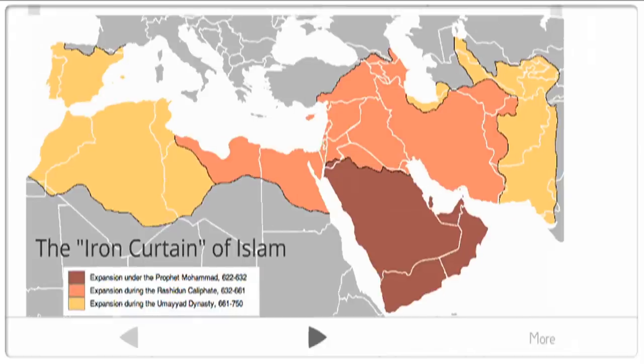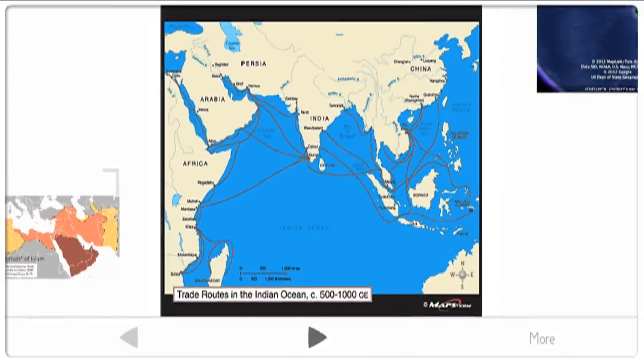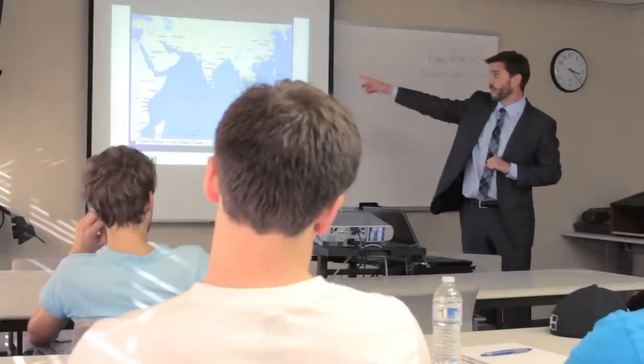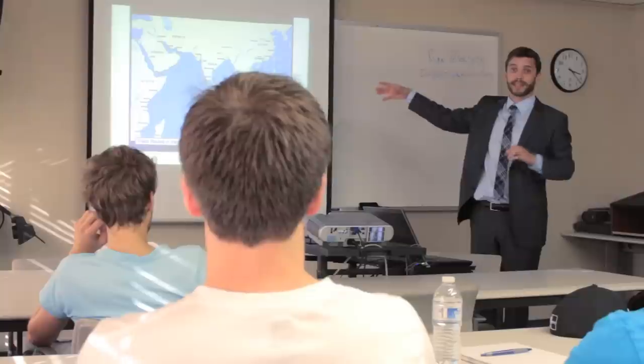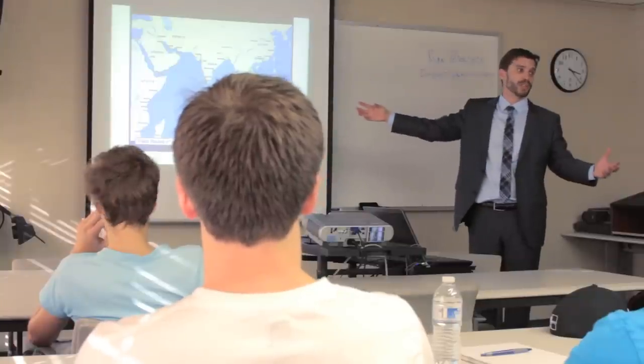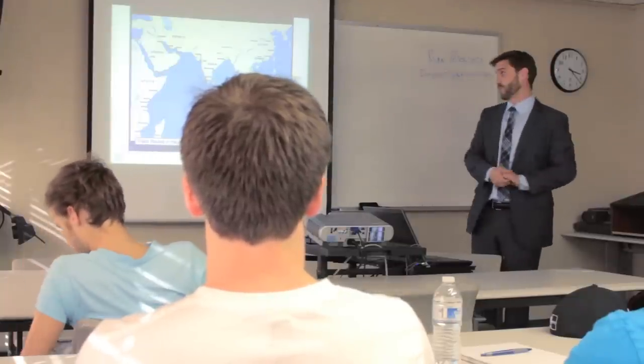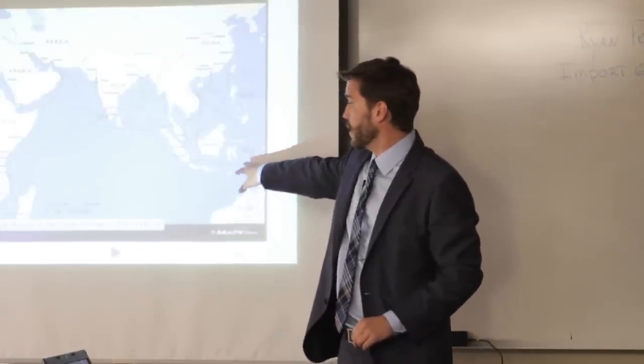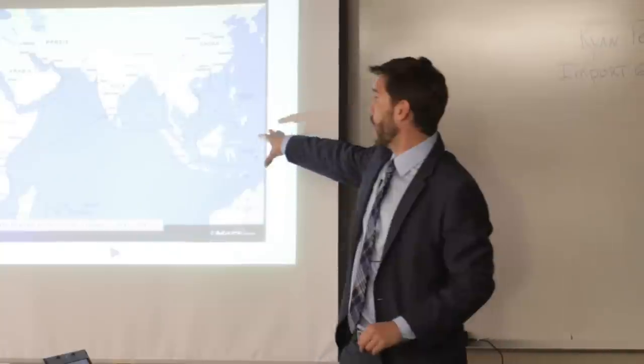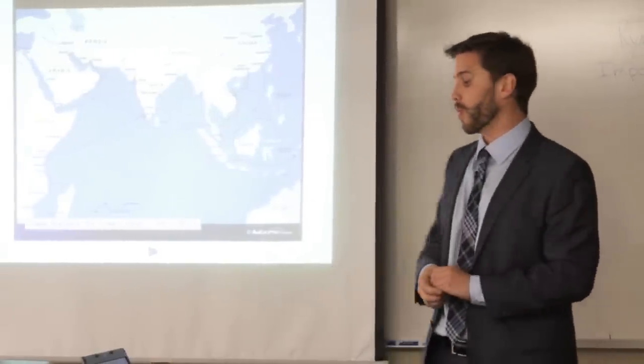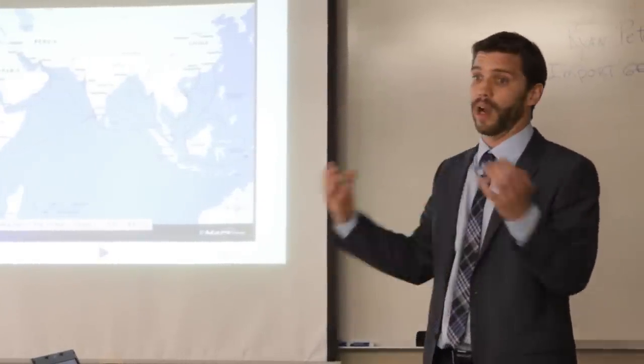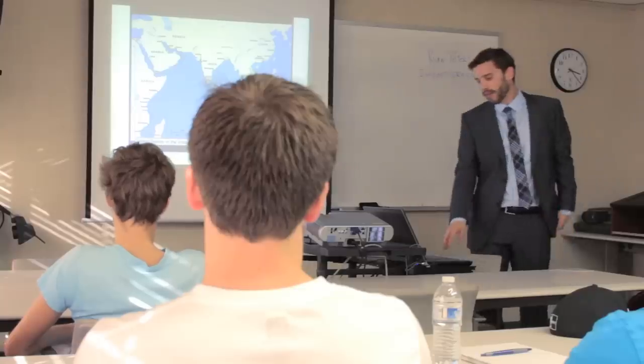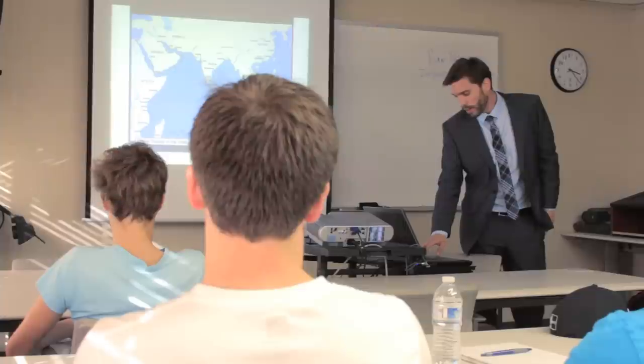And so at that time, by no means did the trade in the Indian Ocean stop. If anything it accelerated. The Muslims were phenomenal traders and they traded throughout. And the reach of Islam today is largely defined by where its merchants went thousands years ago, reaching as far out as the Spice Islands and Madagascar. Muslim trade routes went throughout the Indian Ocean. It was largely a Muslim sea, a Muslim lake.